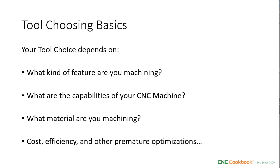This slide tells you the basic factors that will influence which tool you need to choose. Your tool choice depends on these four things: what kind of feature are you machining — for example, is it a hole, a pocket, or something else? Number two, what are the capabilities of your CNC machine? For example, CNC routers have high spindle speeds that limit the use of larger diameter tooling. Number three, what material are you machining? Titanium is a lot different than wood in terms of cutters. And number four, cost, efficiency, and other premature optimizations. We can do a lot with just those four areas and the interactions between them to help you make the best tool choices.